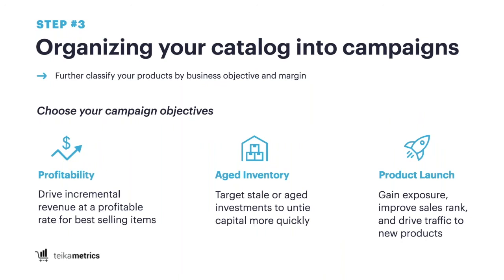Step three: focus on your business objectives, because not all your products are going to share the same objective. Are you focusing on profitability? Are you liquidating aged inventory to avoid long-term storage fees? Or are you launching for additional exposure? This is going to dictate how you invest money into those campaigns. Think about that spreadsheet where you have all your products, what category they're in, and then go one layer further — what's my objective with this group of products? You may have tents you're looking to launch and others where you're seeking profitability.